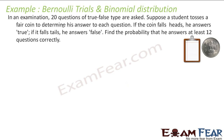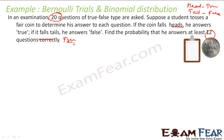Let us take another example. In an examination, 20 questions are true-false type. A student tosses a coin to decide the answer — if head, he answers true; if tail, he gives false. Find the probability that he answers at least 12 questions correctly. Correctly in the sense true. So we need the probability that this student has 12 questions marked as true.